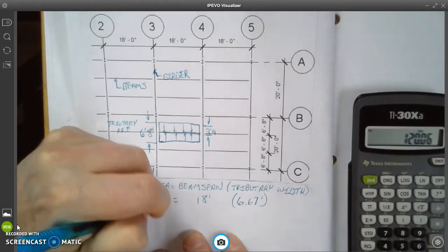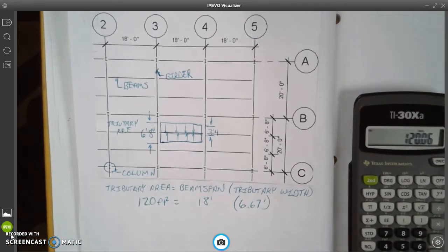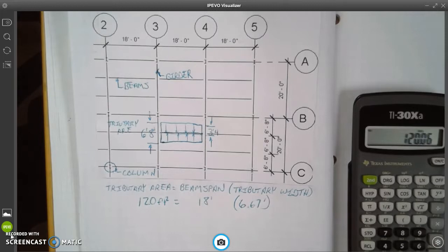120 feet squared. So the tributary area for this system is 120 feet squared. What that means is that that beam is accounting for 120 square feet of space above it, and it's taking that load and supporting that load.